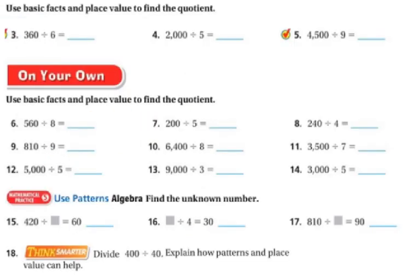You can think of these as reverse multiplication. I'm going to identify my basic facts: 36 divided by 6. What times 6 equals 36? That's 6. And since it's really 36 tens, I have one zero. Then for 2,000 divided by 5: my basic facts are 5 and 20, and I have two zeros left, so my answer is going to have two zeros. 5 goes into 20 four times, so the answer is 400.